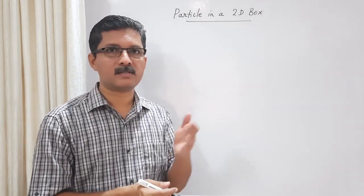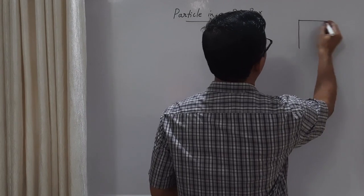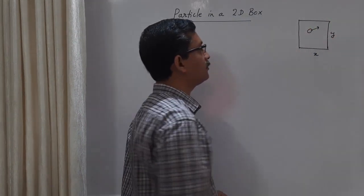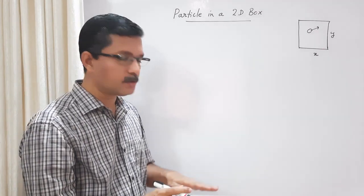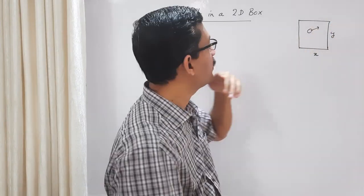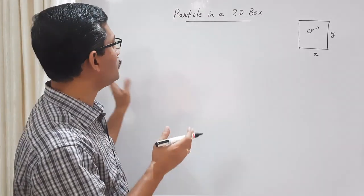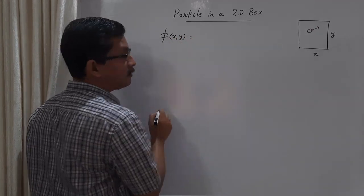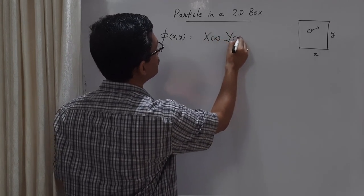So how do we generalize the results of a one-dimensional box to a two-dimensional box? The general wave function will be a function of both x and y. We can write it as a wave function that depends only on x, capital X, and a wave function that depends only on y, capital Y. We can substitute this into the time-independent Schrödinger equation and try a variable separable method.